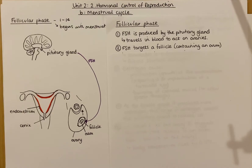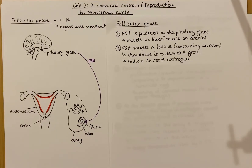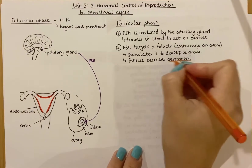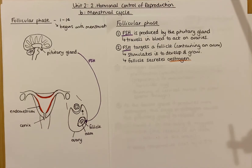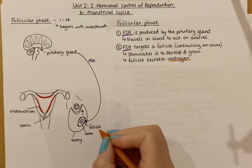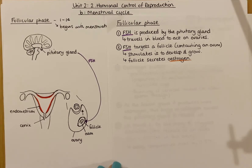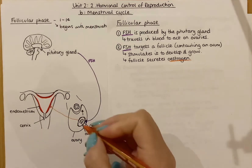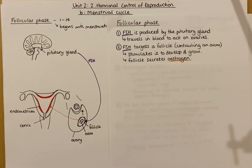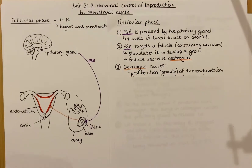That follicle will then produce another hormone: oestrogen. The follicle grows and develops and produces oestrogen. Oestrogen is produced by the follicle and targets two areas of the female reproductive system. It targets the endometrium — the lining of the womb — and causes it to proliferate, meaning to grow and develop. The bigger and thicker the endometrium gets, the more likely it is that implantation can occur.